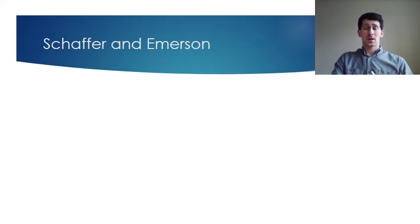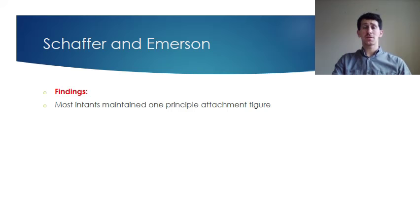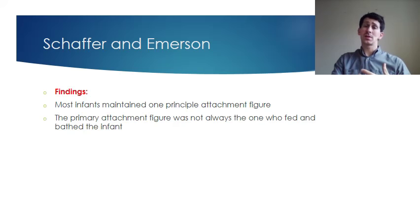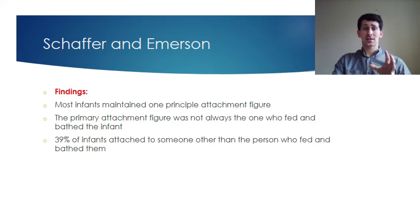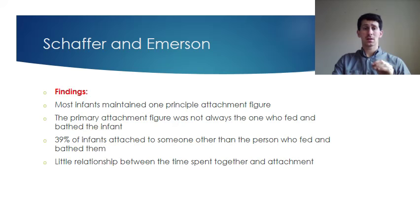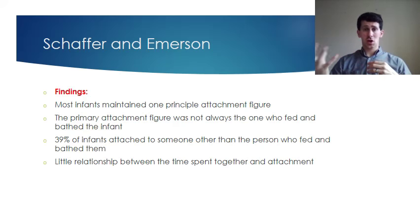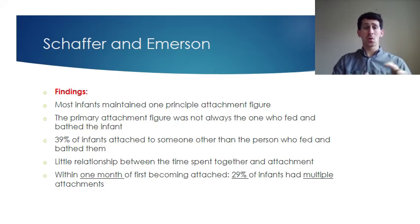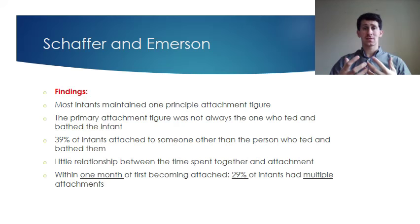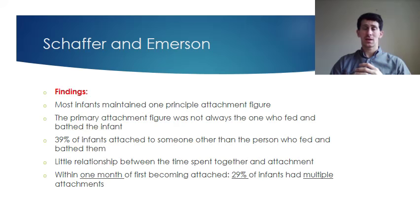Looking at the findings of Schaffer and Emerson's study: they found that most infants maintained one primary attachment figure — most young babies would attach to one person, and that was always the person who fed or bathed them. However, 39% of children attached to someone other than the person who fed them, and there was actually little relationship between the amount of time spent with the child and the attachment formed. What was more important was whether someone could respond to the child's cues — if you were sensitive and responded when they cried or smiled, you were far more likely to form an attachment.